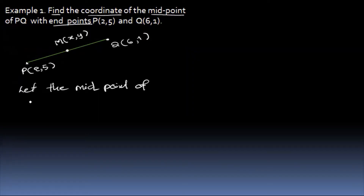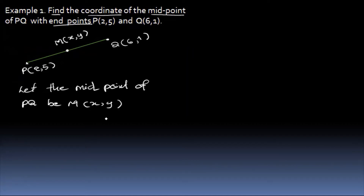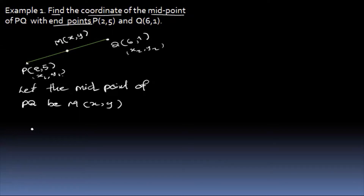The midpoint of BQ — let M(x,y) be the midpoint of BQ. The midpoint formula is (x1 plus x2) divided by 2, and (y1 plus y2) divided by 2. So this gives us x1, y1 and x2, y2.